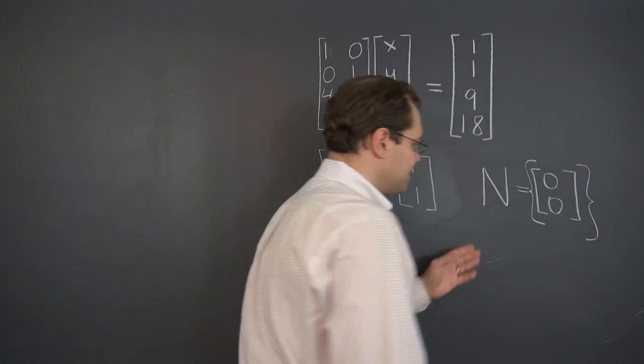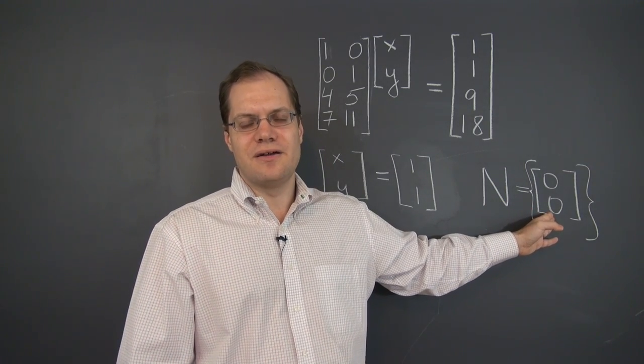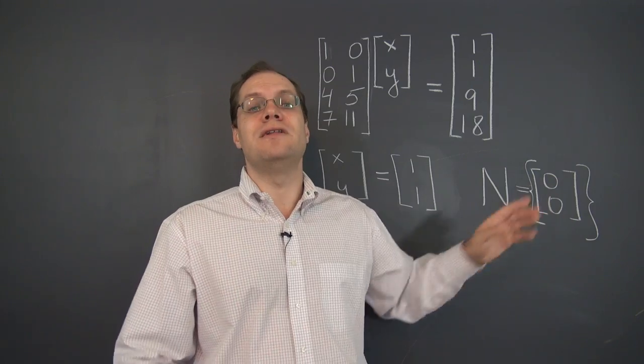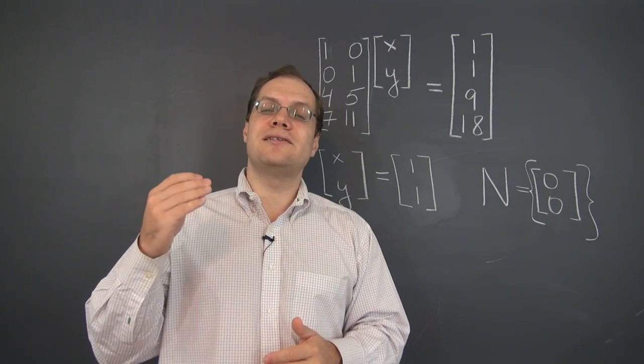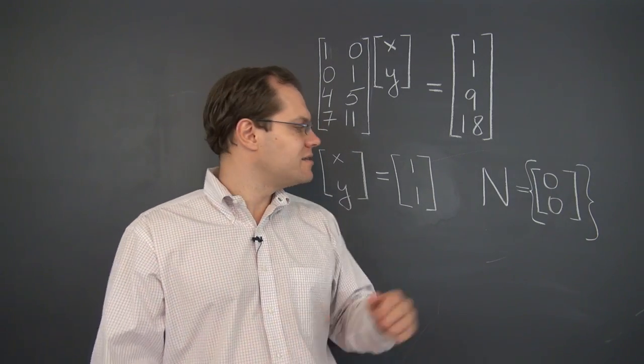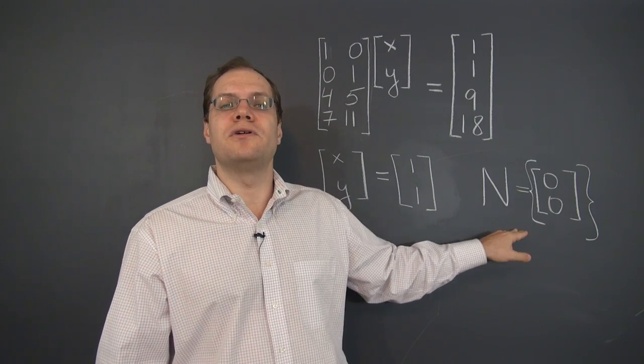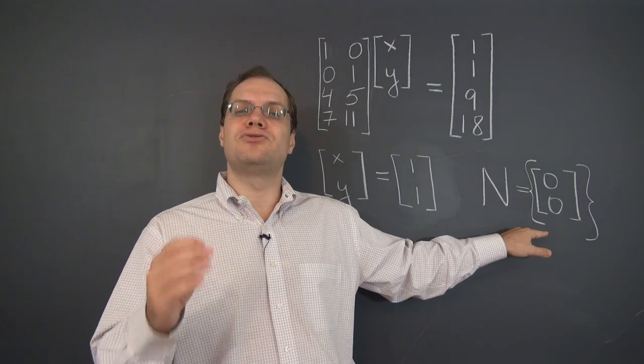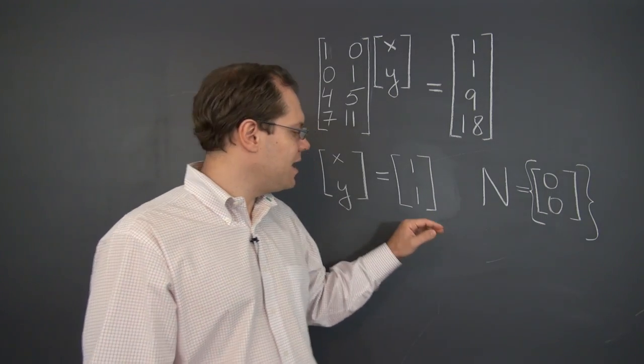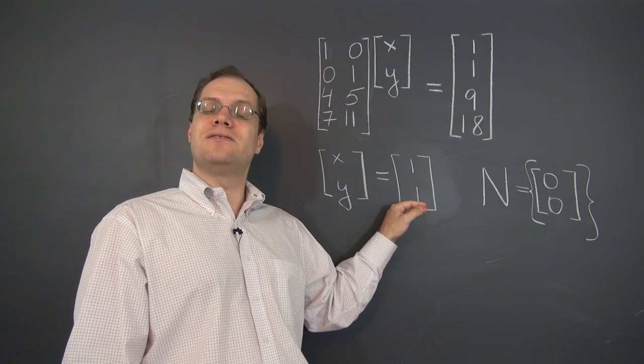And because we think of the null space as a set of vectors rather than a vector itself, it would actually be good practice to put this in curly brackets to say that the null space is a set consisting of a single vector, the zero vector. So the null space is never empty. The null space always has the zero vector in it, but in this case the null space only has the zero vector in it. Therefore we'll call this null space the trivial null space.